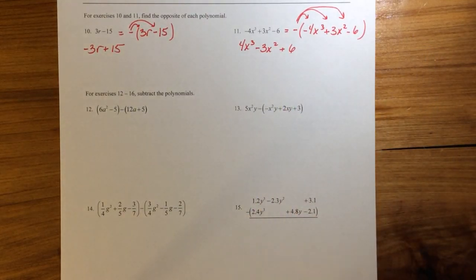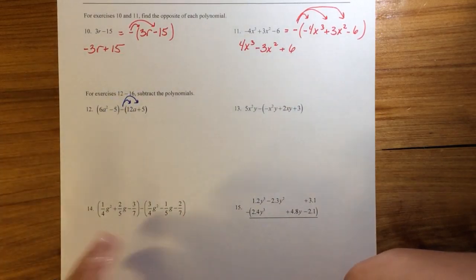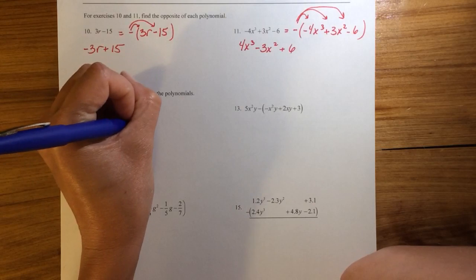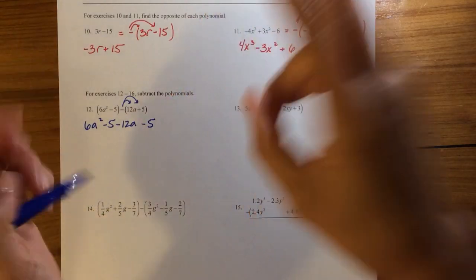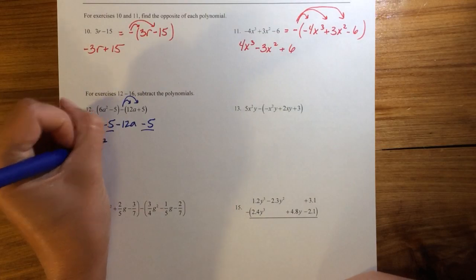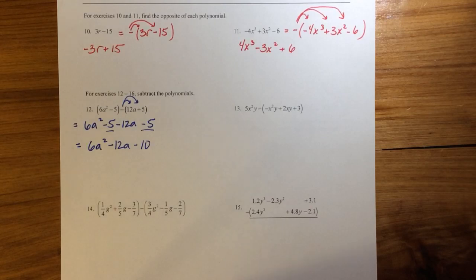For number 12, we have to distribute that negative through first. So we've got 6a squared minus 5, minus 12a minus 5. Now we combine like terms — the only like terms are the two negative 5s. So we get 6a squared minus 12a minus 10. That's it — very similar to addition, just with that extra step of distributing the negative.